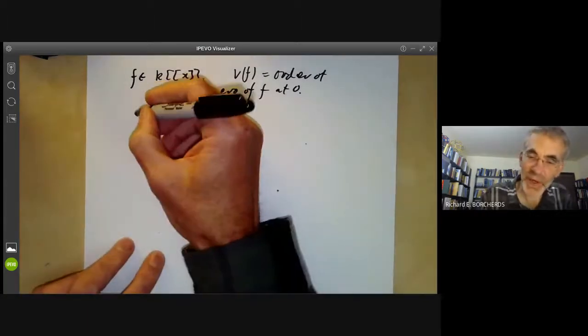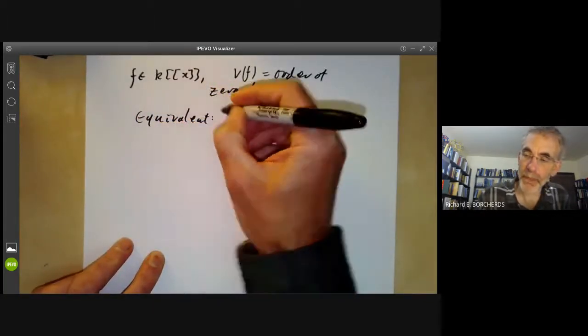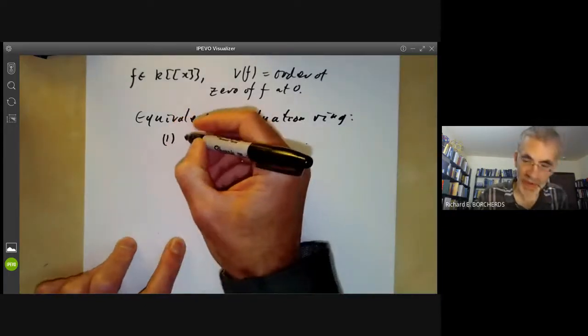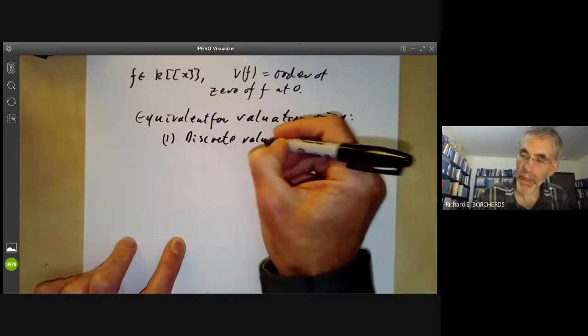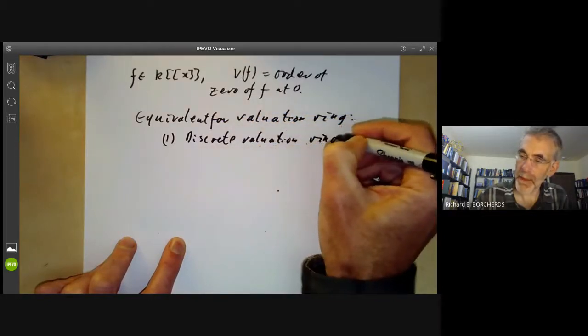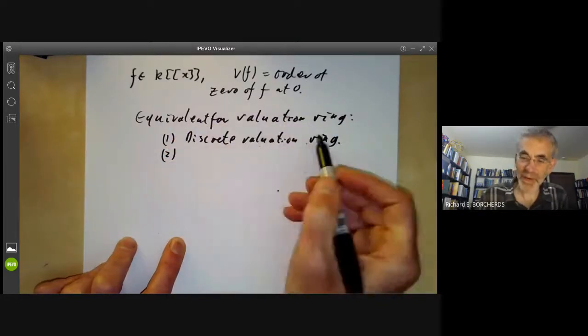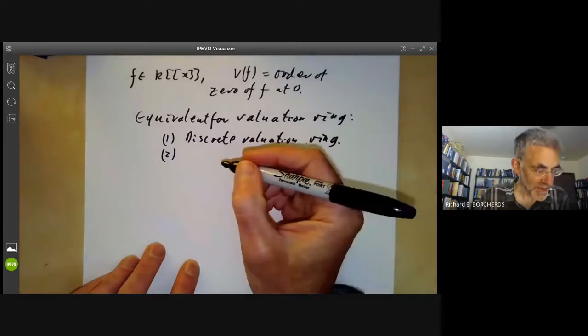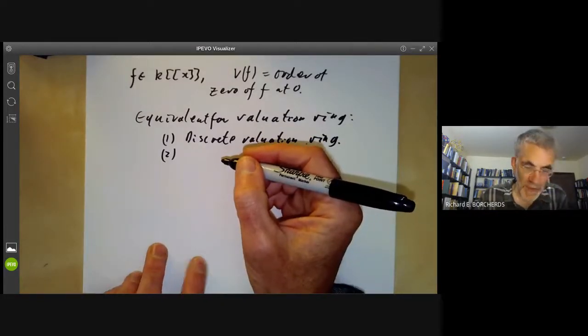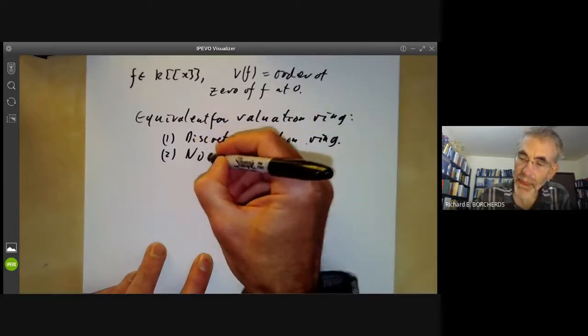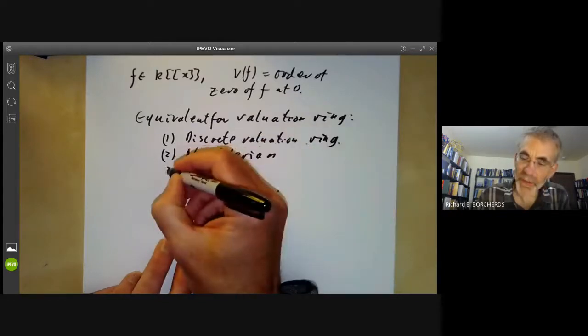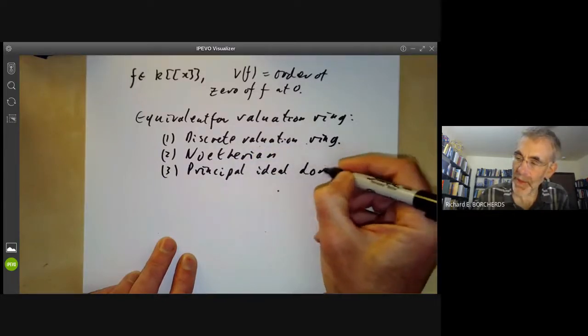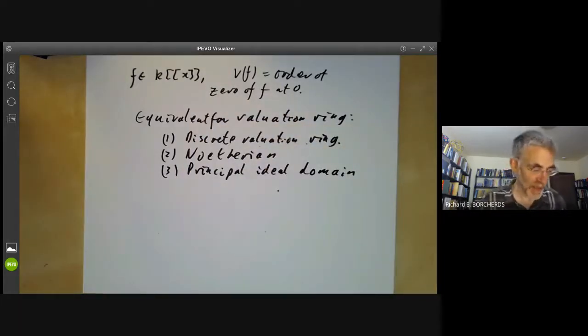So the following are equivalent for a valuation ring. First of all, it can be a discrete valuation ring. You might want to count fields as discrete valuations as well, and allow the valuation group to be trivial. Or it could be Noetherian. Or it could be a principal ideal domain. So proving the equivalence of these for a valuation ring is very easy, so I'm not going to bother with it.